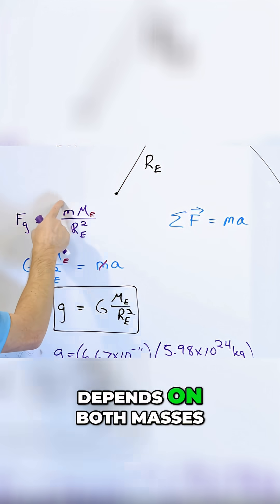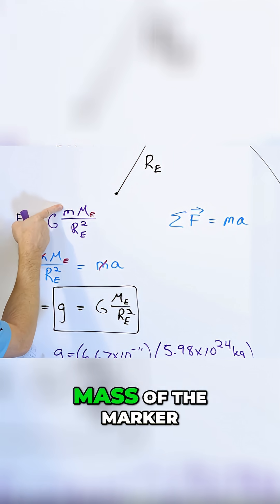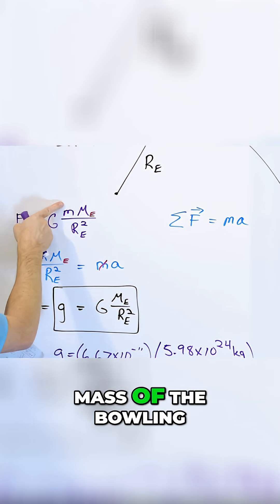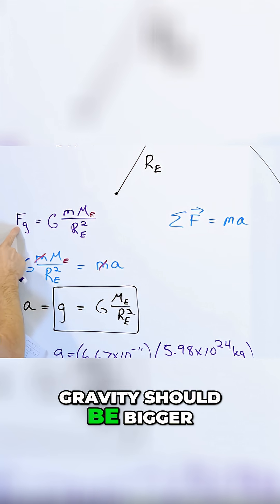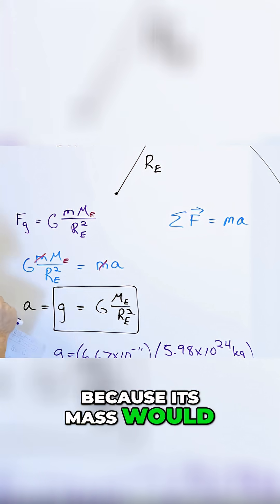the force of gravity depends on both masses. And so if the mass of the marker is small and the mass of the bowling ball is much, much bigger, then the force of gravity should be bigger for the bowling ball because its mass would be bigger.